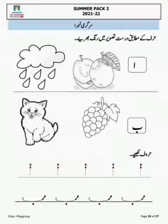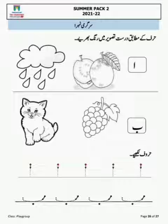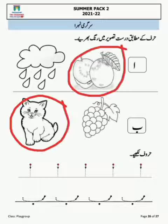سب سے پہلے سرگرمی ہے: 'حرف کے مطابق درست تصویر میں رنگ بھریں۔' الف — آپ کے سامنے بادل اور امرود ہے۔ الف سے امرود میں رنگ بھرنا ہے، بادل میں نہیں۔ بے — بلی میں رنگ بھرنا ہے۔ اس کے بعد آپ نے الف اور بے کی tracing کرنی ہے، نکات کو ملانا ہے۔